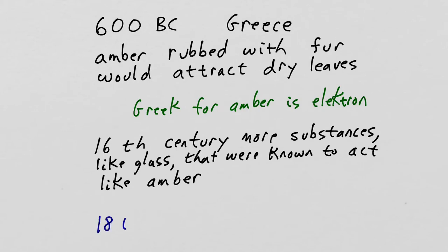By the 18th century, it was known that rubbing things together produced two different entities.